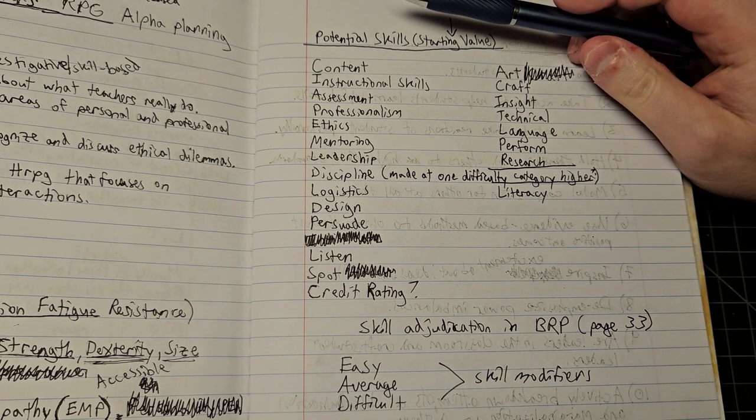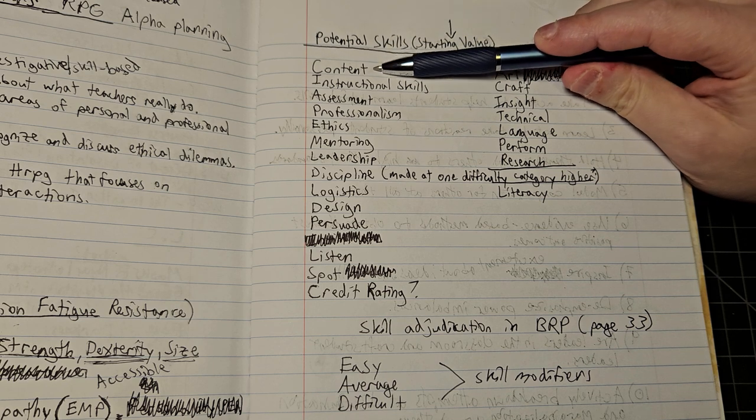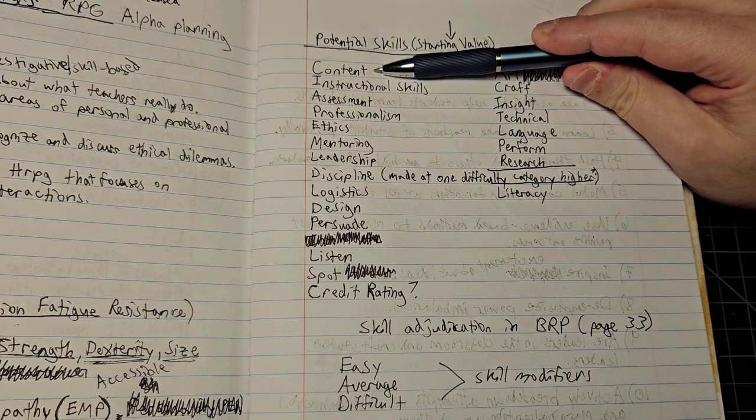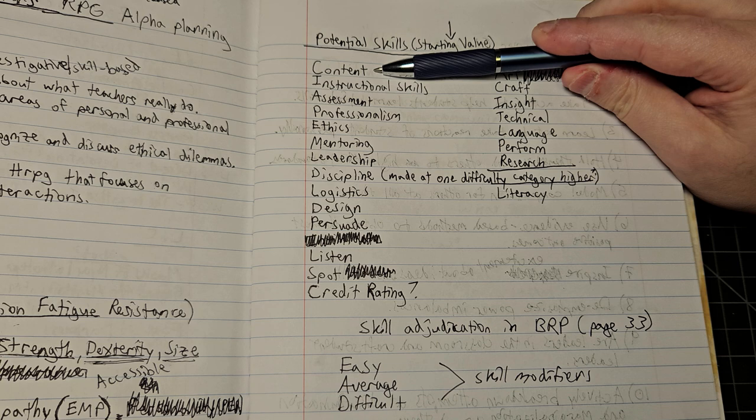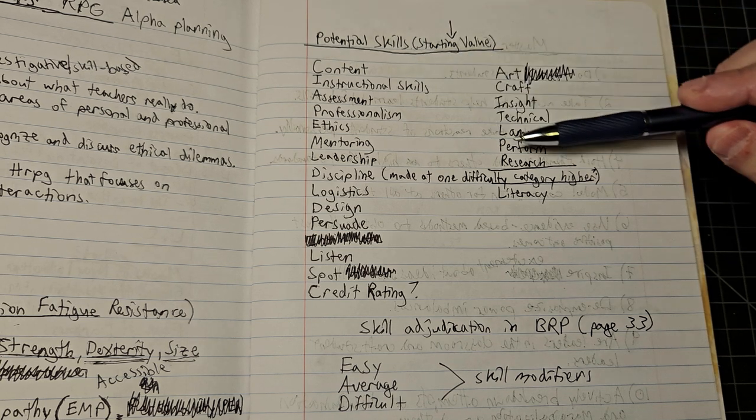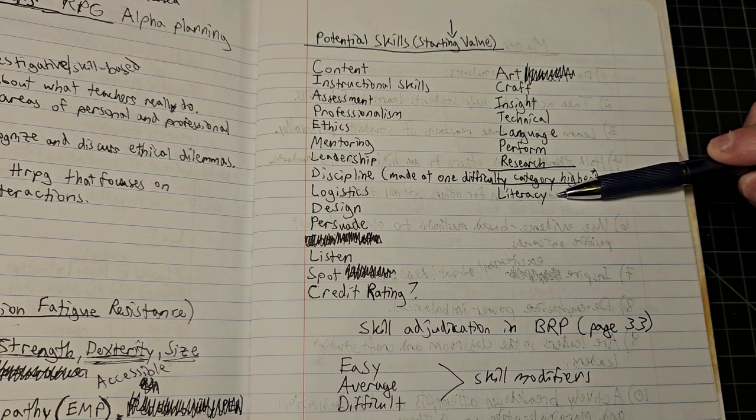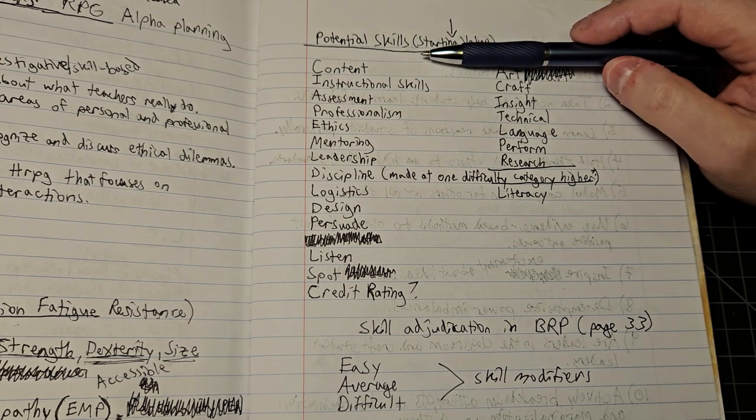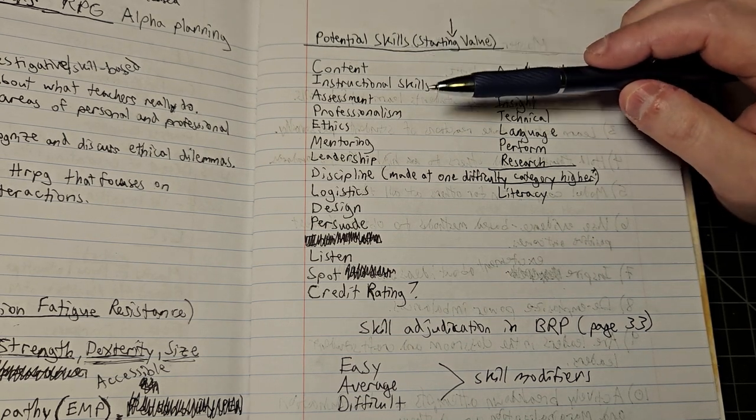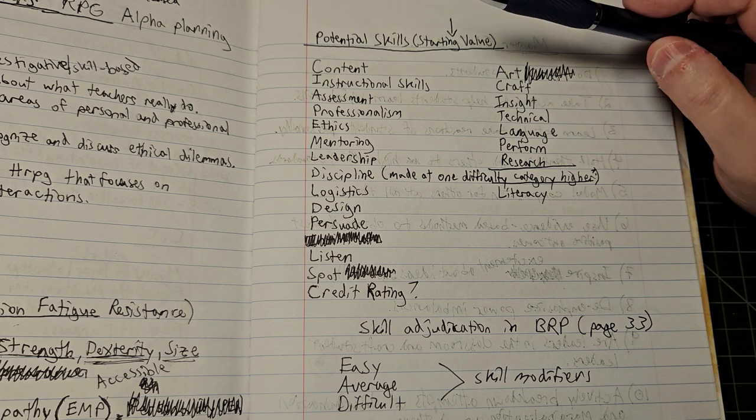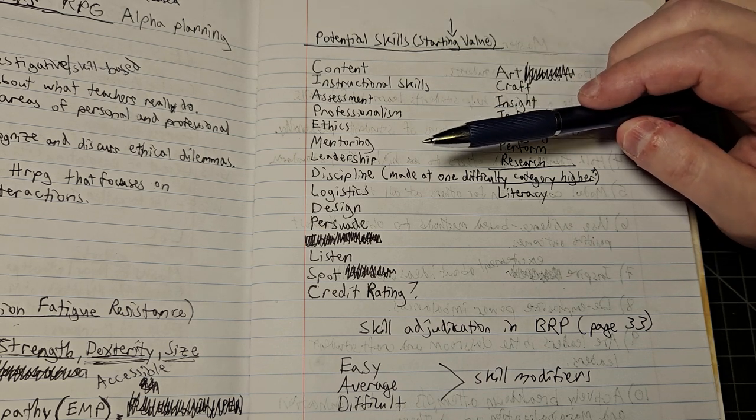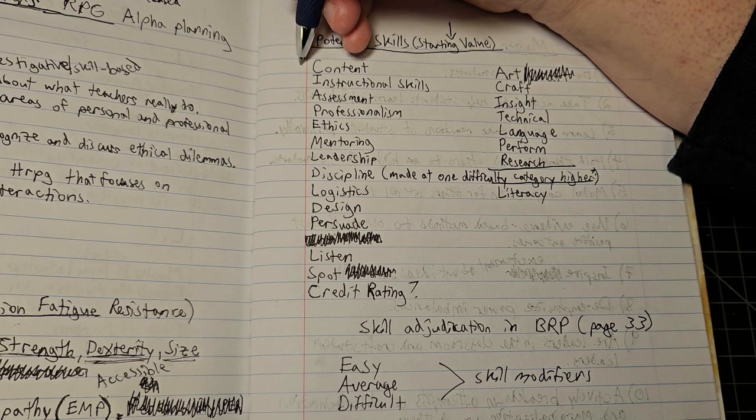I'm adding some skills. Content - why not just have science physics if you're a physics teacher? Why not have literacy if you're an English teacher? Why not have history as a skill if you're a history teacher? The answer is because that is not the focus of this game. We are going to assume a baseline level of content understanding.